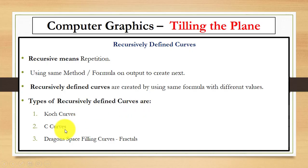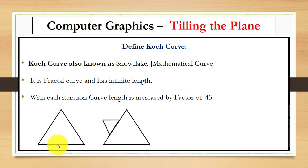First is Koch curve, also known as snowflake curve. It is a mathematical fractal curve with infinite length. With each iteration, the curve length is increased by a factor of 4/3.